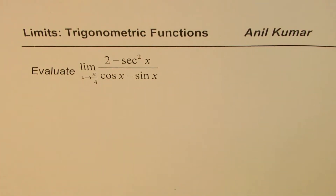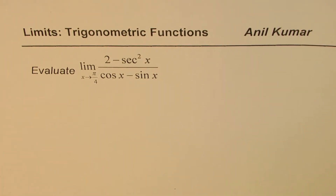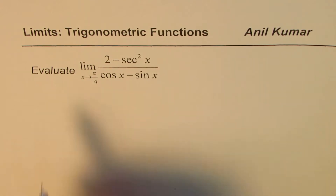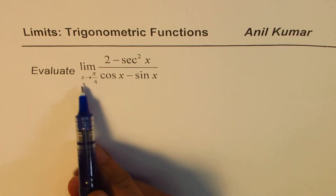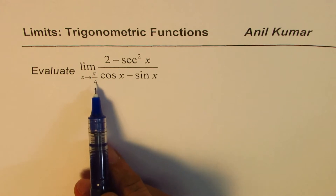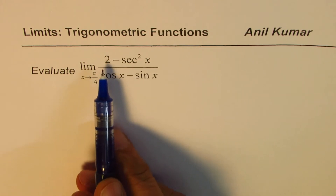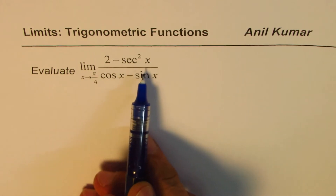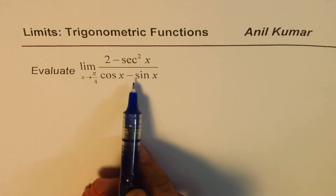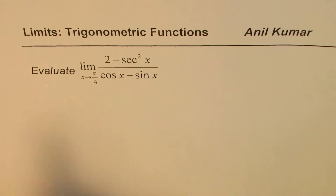I'm Adil Kumar, sharing with you a difficult question on limits of trigonometric functions. The question is: evaluate the limit when x approaches pi by 4 for 2 minus secant squared x, divided by cos x minus sin x.